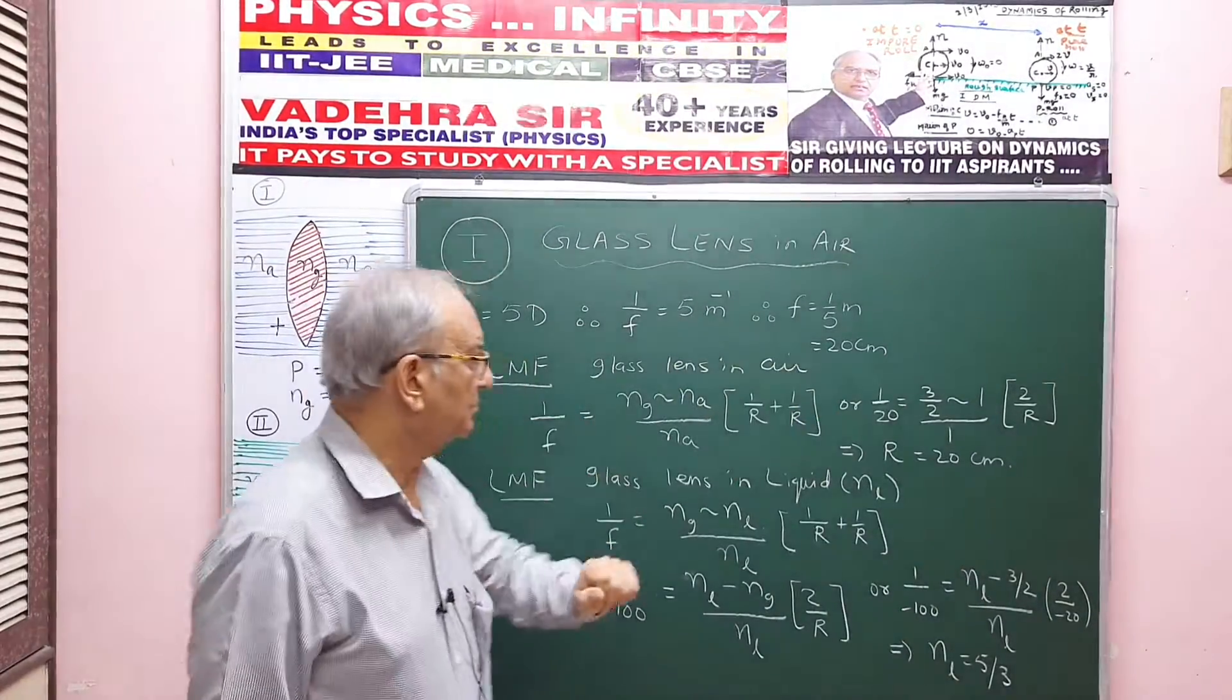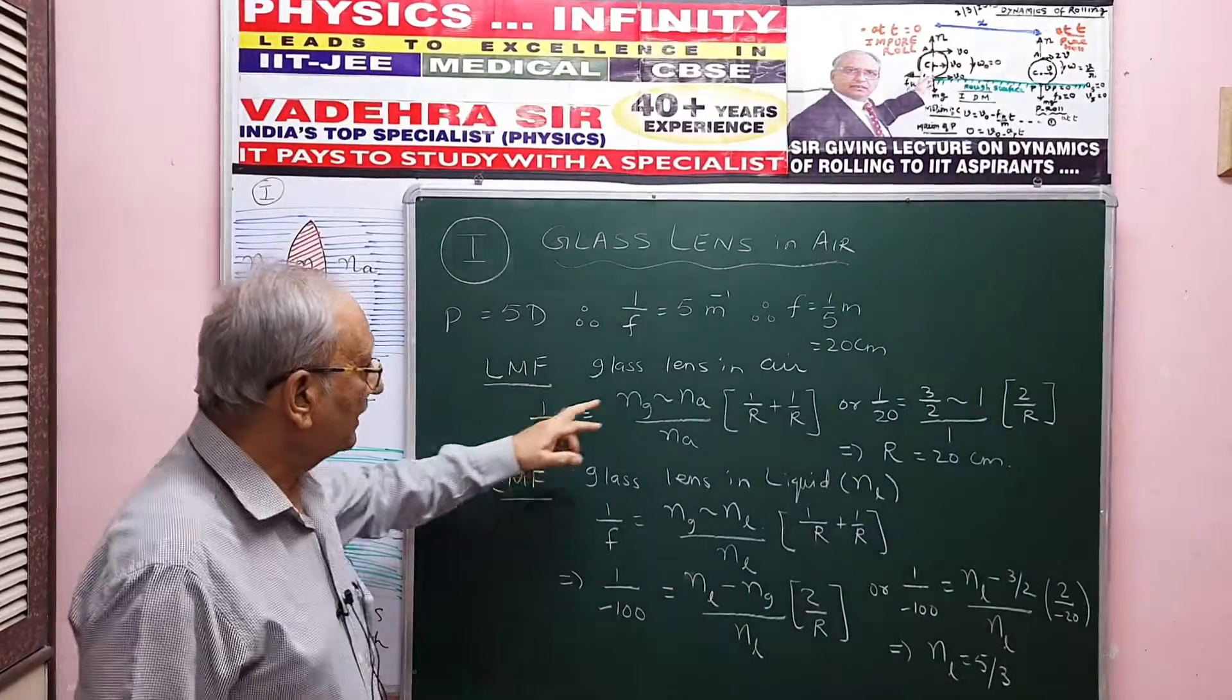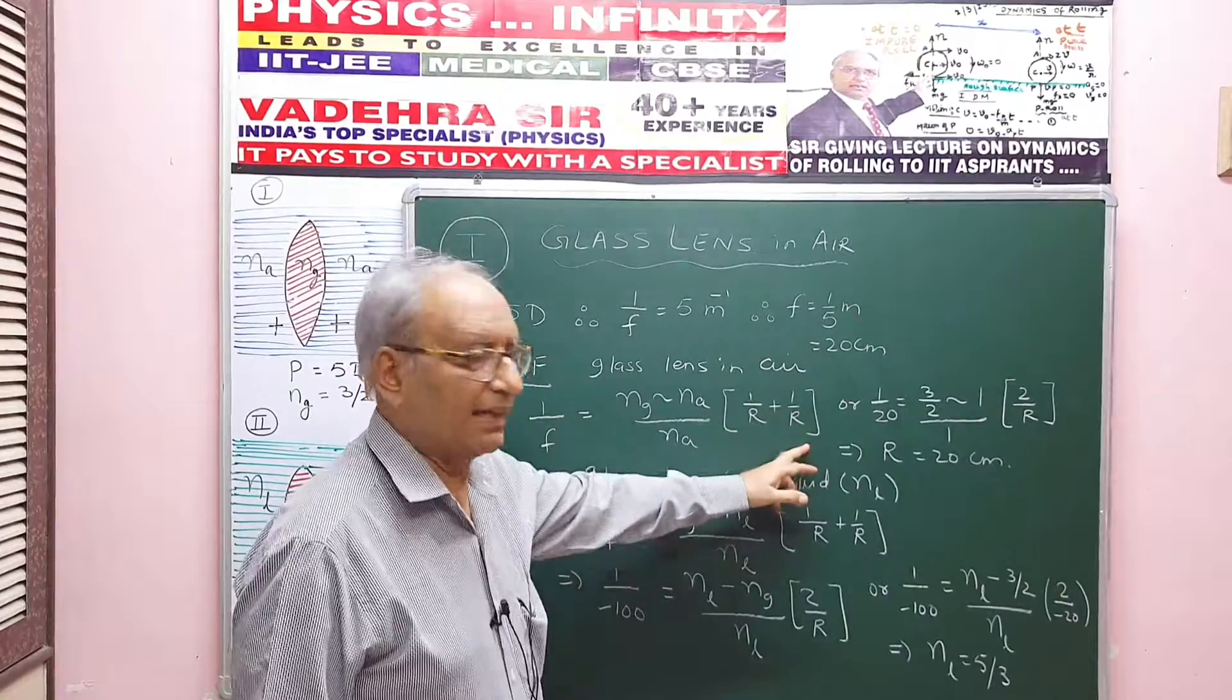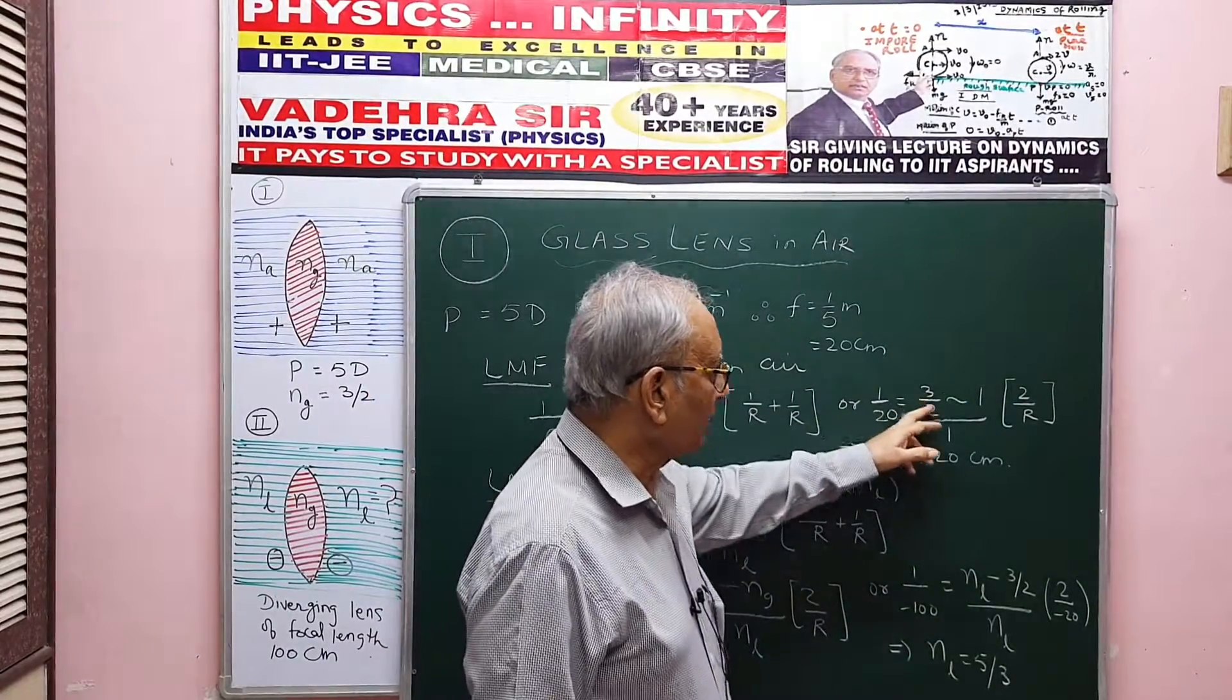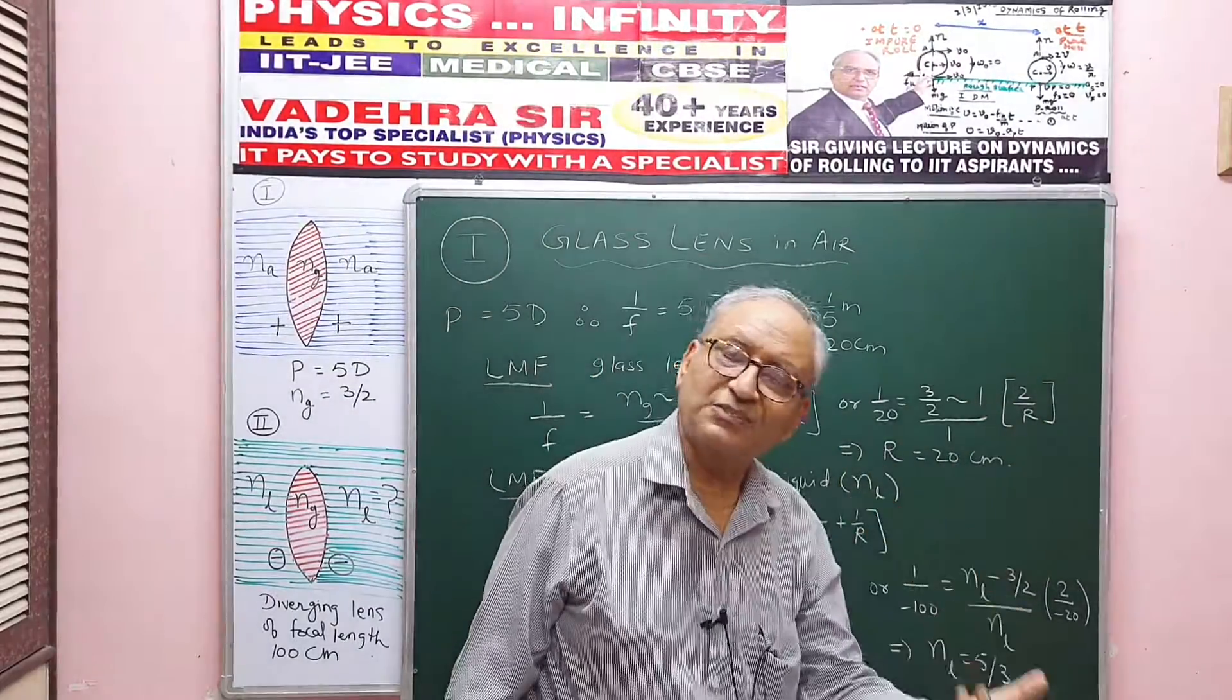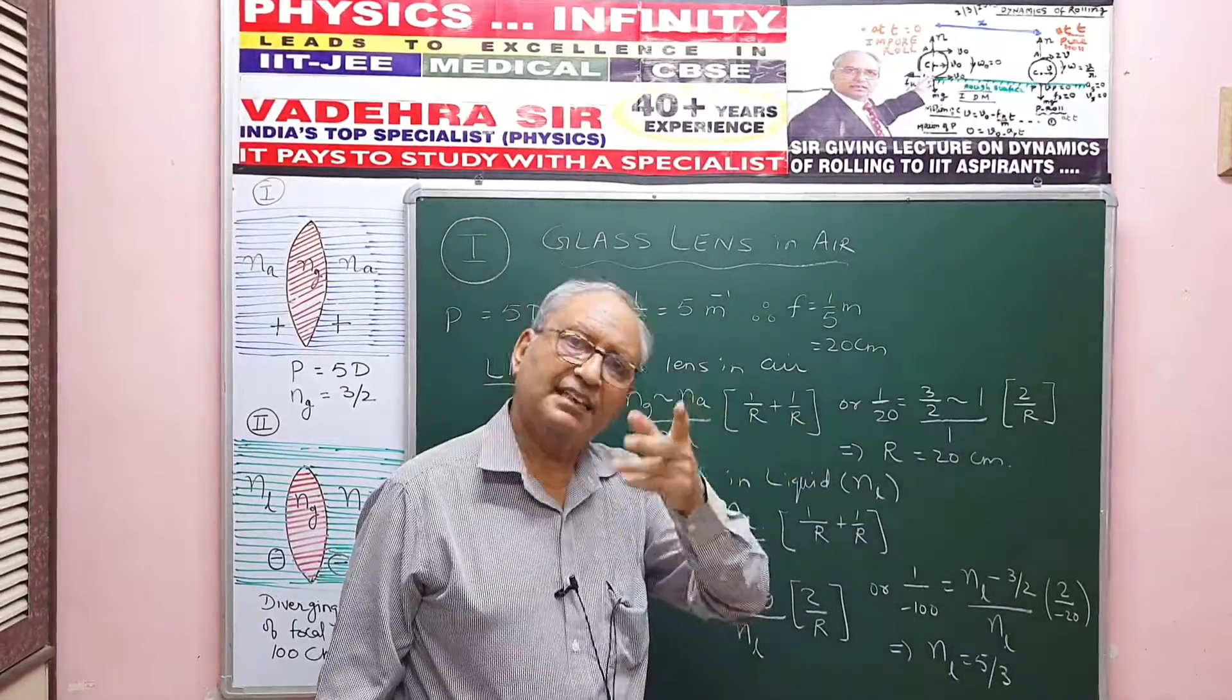Lens maker formula: glass lens in air. 1 by F is NG minus NA upon NA into 1 by R plus 1 by R. Or 1 by 20 is the difference of 3 by 2 and 1 upon 1, 2 by R. That gives you R also as 20 centimeter. So both the surfaces have radii 20 centimeter in air, both are plus, both are convex surfaces.